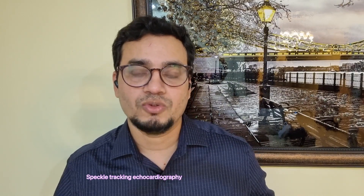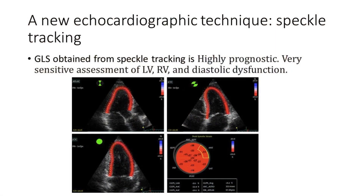The second criterion is the tricuspid systolic lateral annular velocity on TDI — the S' wave — if it is less than 15 cm/s. The third criterion is RV fractional area change (RV FAC) — if it is less than 35%. There is also a newer echocardiographic technique called speckle tracking, which gives you a marker called Global Longitudinal Strain (GLS). This denotes the change in length during systole compared to diastole, and it is a better surrogate measure of LV contractility compared to LV ejection fraction.